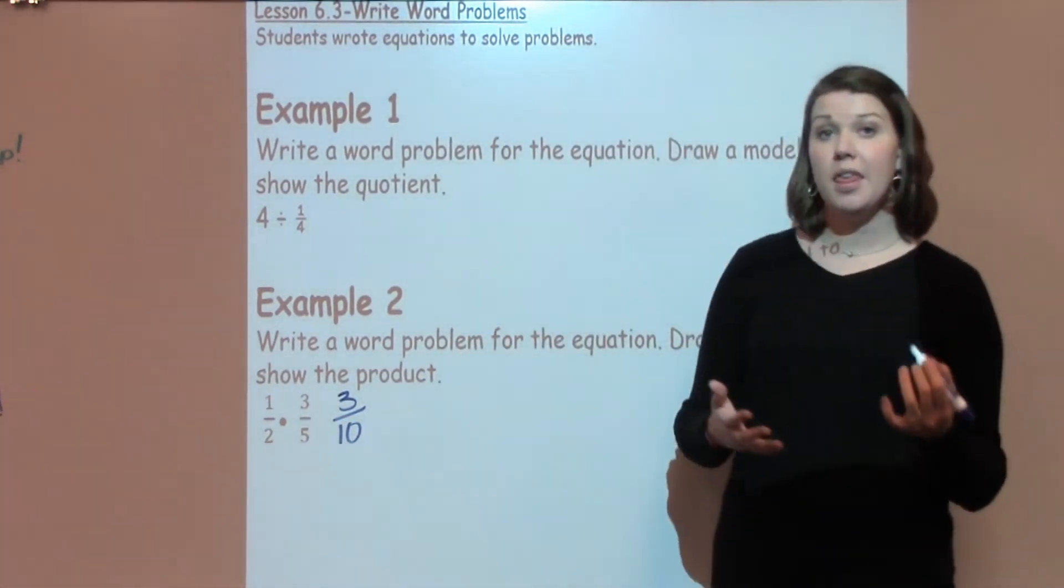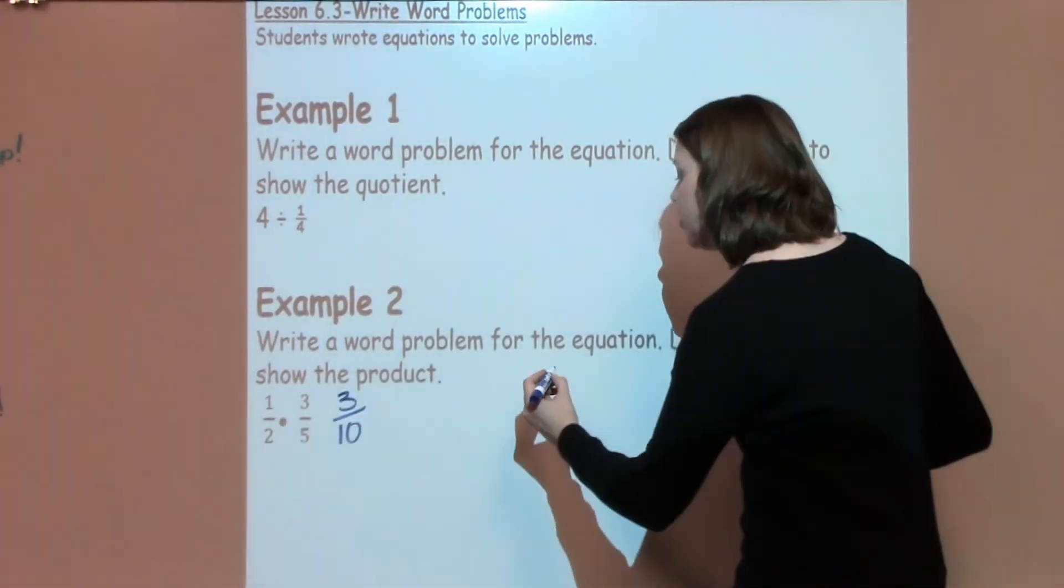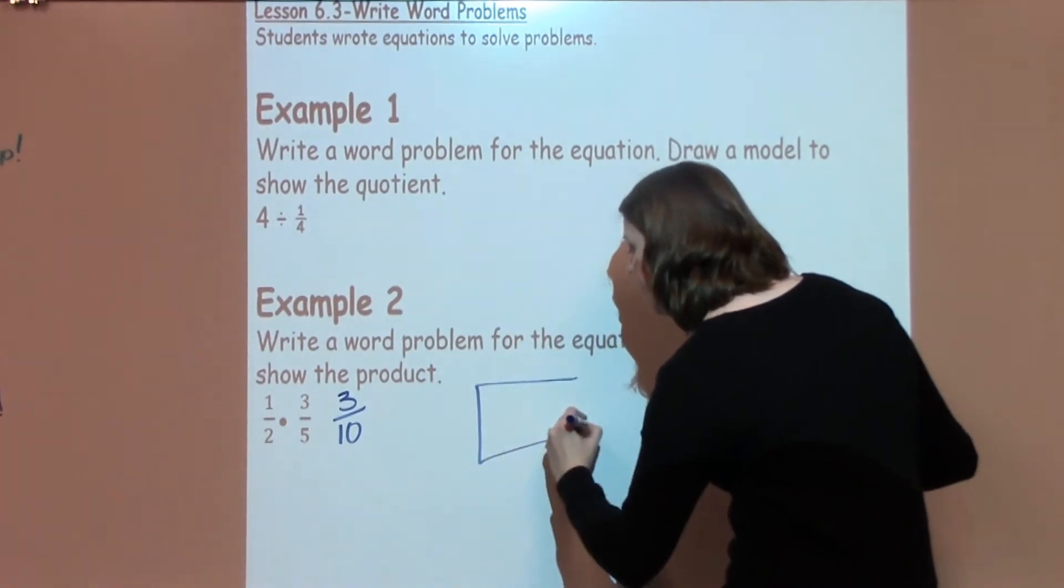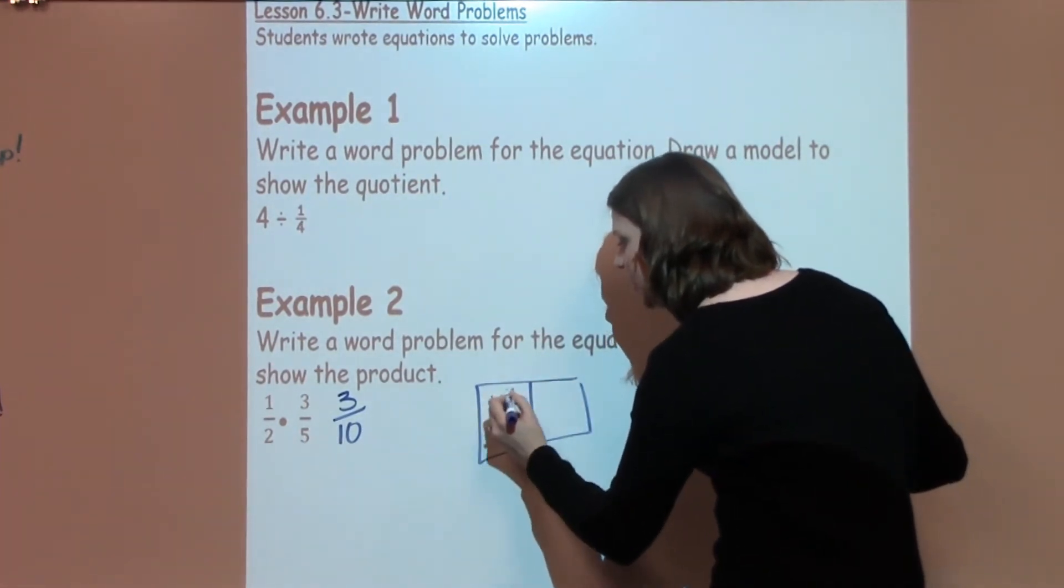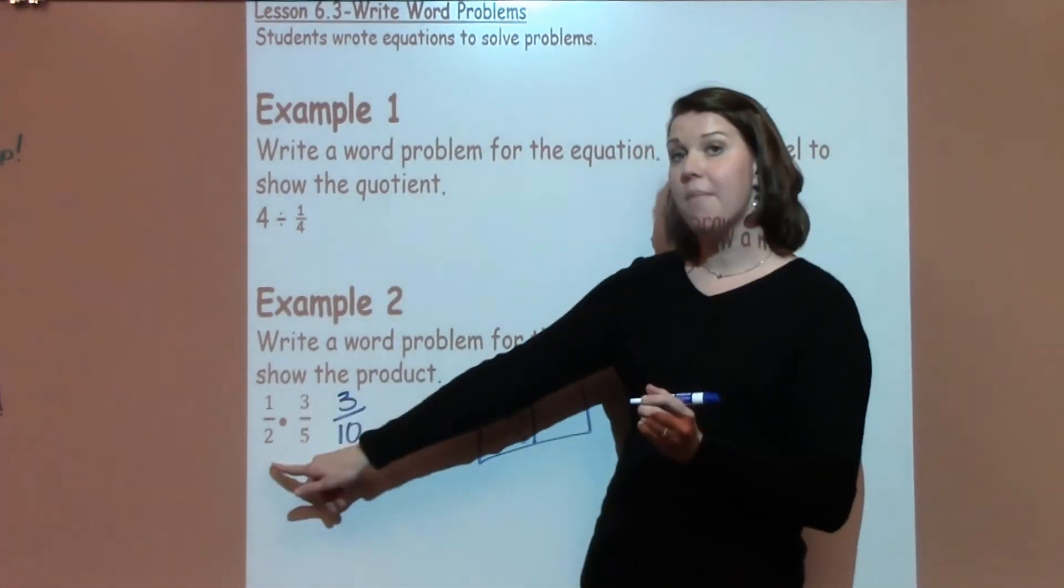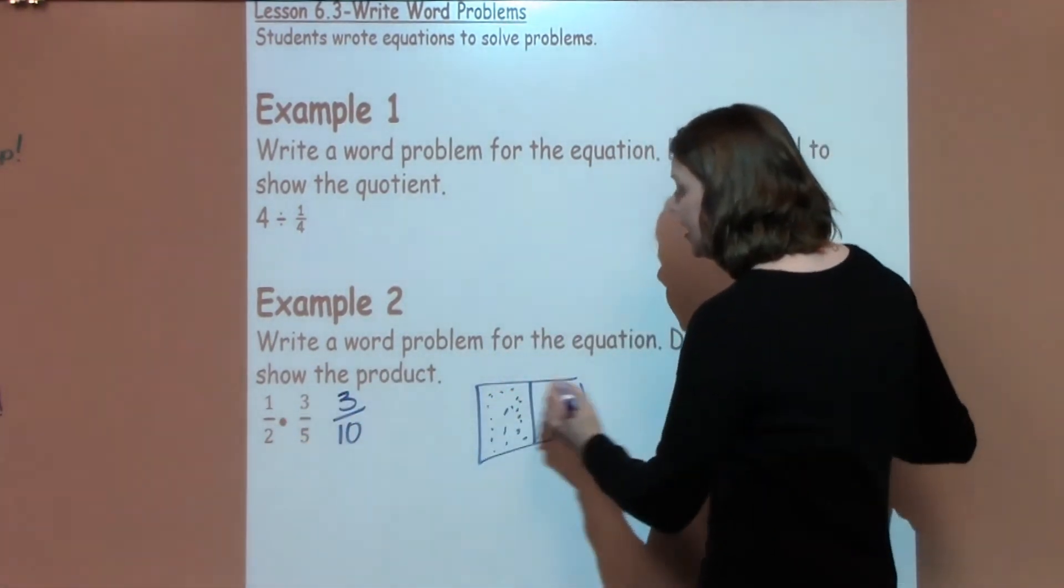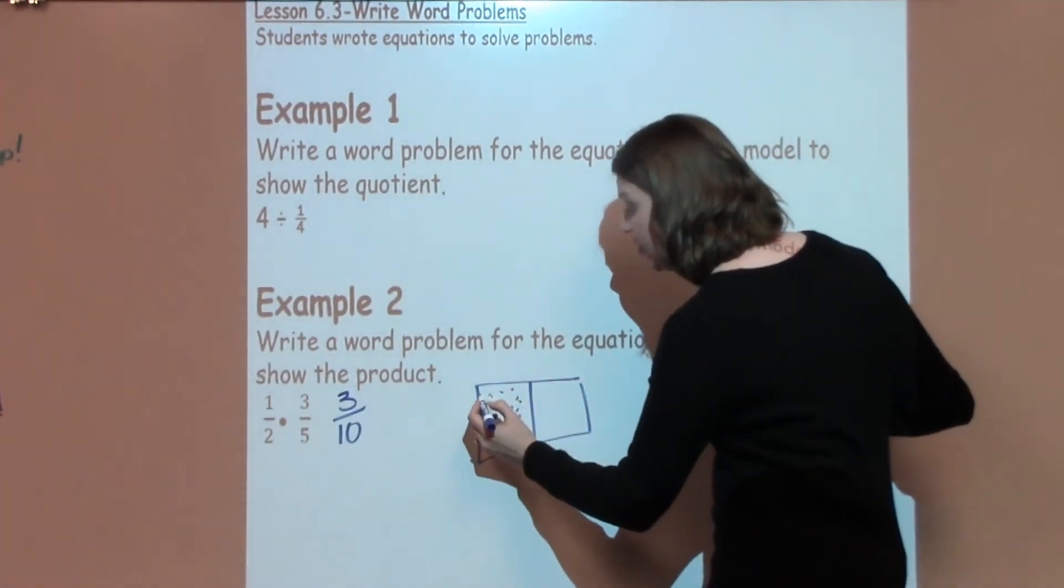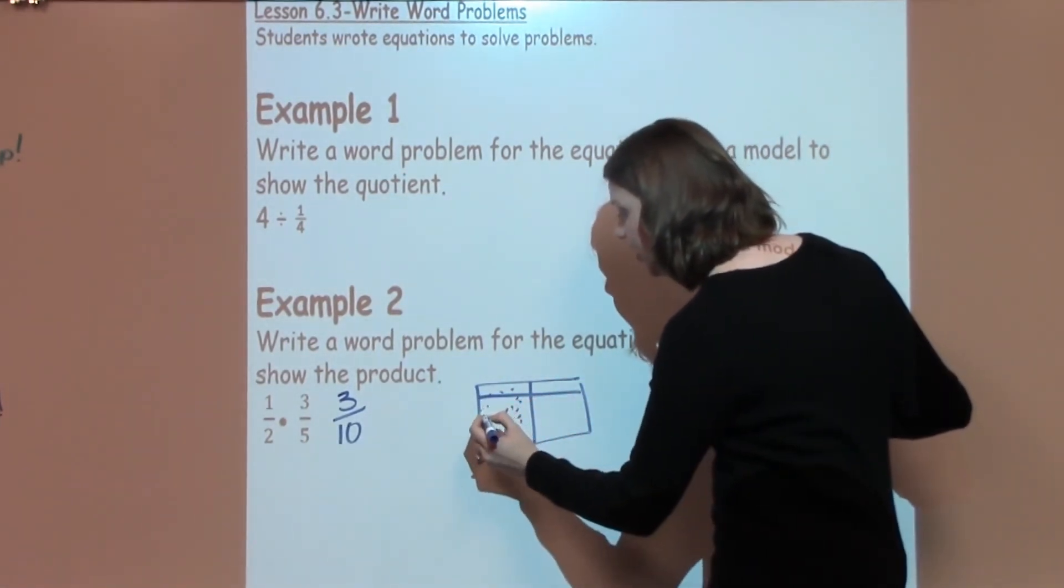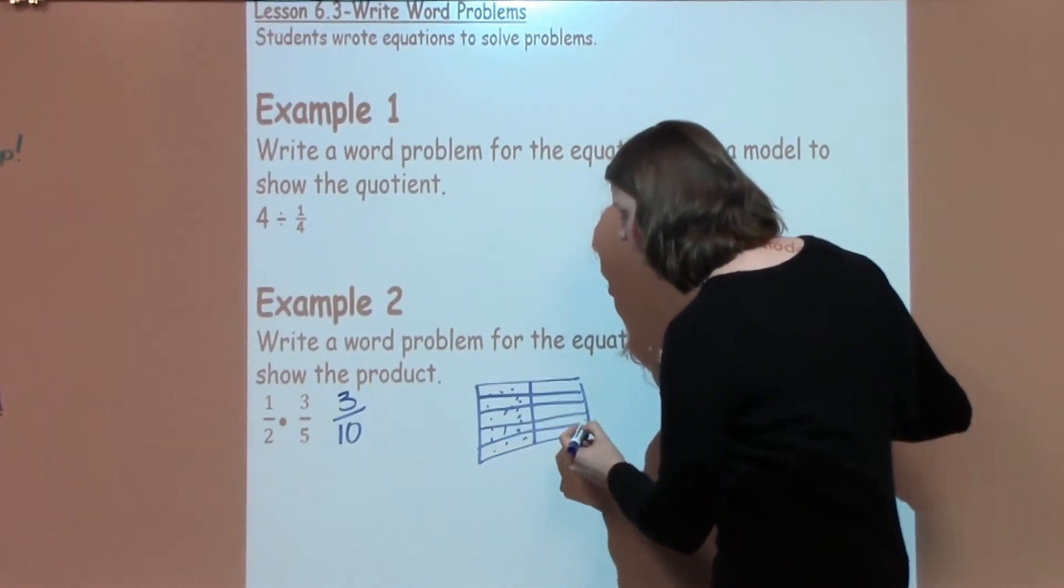Now, that's my answer to the problem, but I need to go ahead and show that in a picture form. So I'm going to go ahead and draw a box to show my 1 half. I'm going to put some dots in here just to show this is my 1 half that I'm using from my problem. Then I need to take that times 3 fifths. So I'm going to take my box and I'm going to divide it into fifths. Here's 1, 2, 3, 4, and 5.